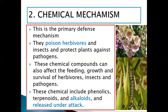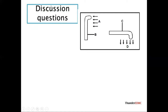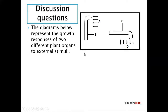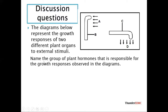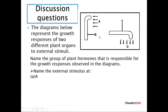Now let's look at some discussion questions. You have a diagram showing growth responses of different plant organs to an external stimulus — the stimulus could be light or gravity. Part A: name the group of plant hormones responsible for the growth response — the answer is auxins. Then name the external stimulus.